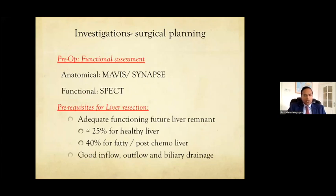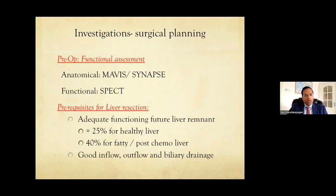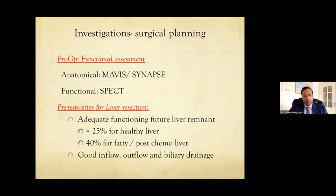Coming to investigations for planning surgery: the key thing about liver resection for colorectal metastasis — or HCCs — is how much liver you're leaving behind. The aim is to leave at least 25–30% of a healthy liver. Most patients will have had chemotherapy, so if someone has a fatty liver due to obesity or post-chemo, you need to leave around 40%. The remnant segment must have good inflow, good outflow, and good biliary drainage — that's the crux of liver surgery.